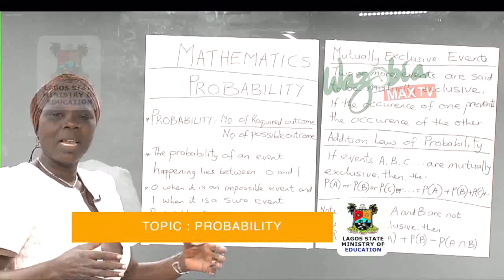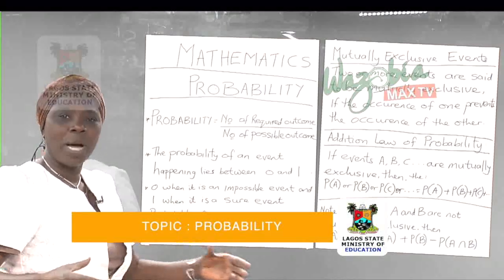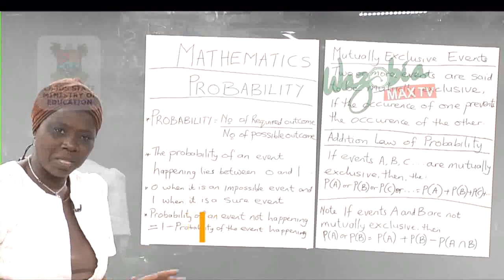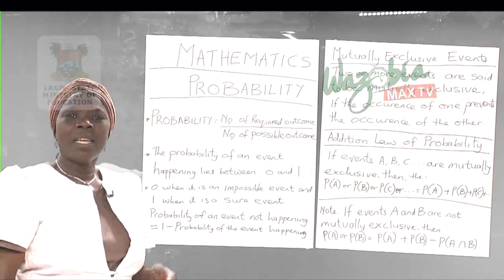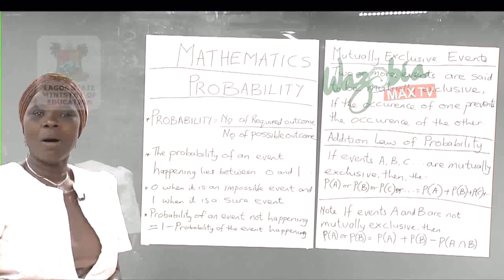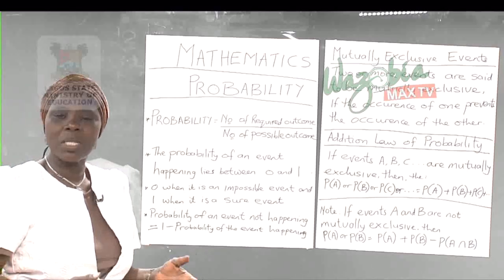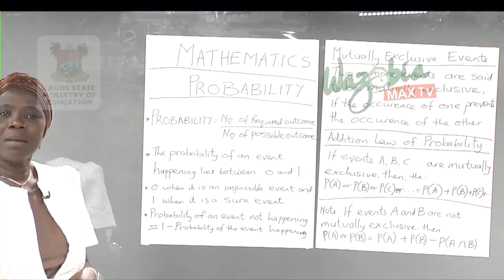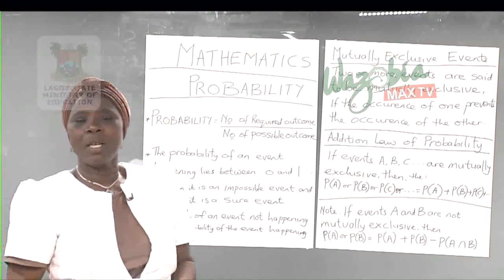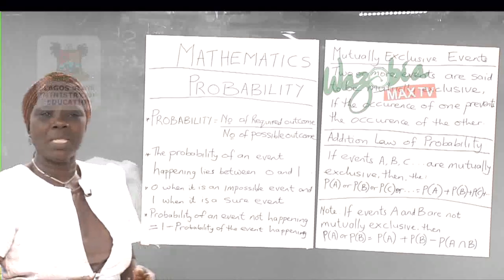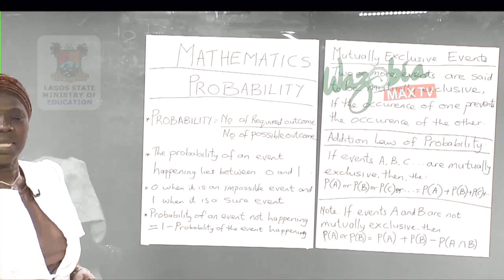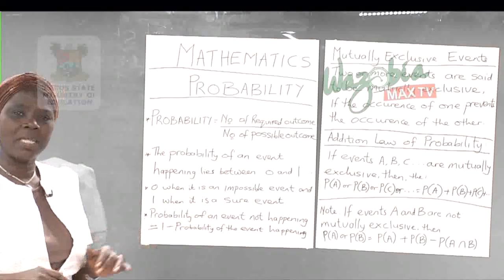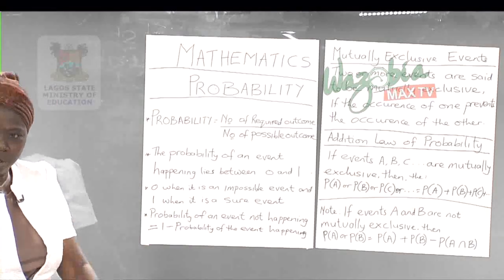The probability of an event lies between zero and one. It is zero when it is an impossible event. For example, in a group of 20 boys and 10 girls, if one person is pregnant, what is the probability that the pregnant person is a boy? Definitely the probability is zero because it is an impossible event.